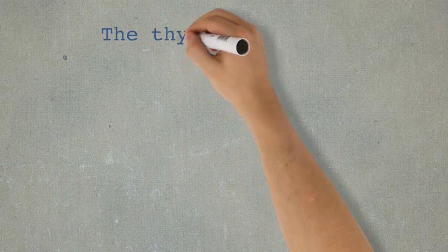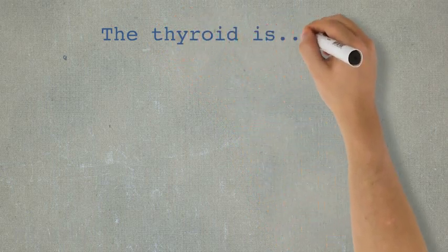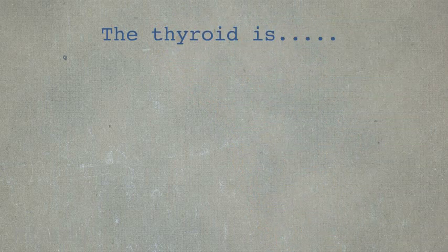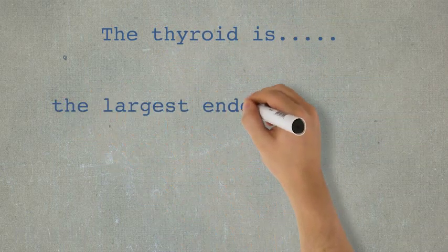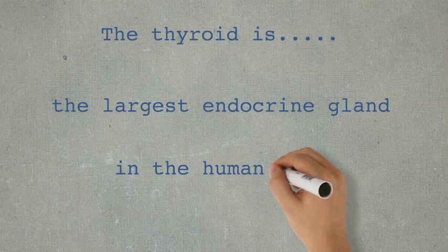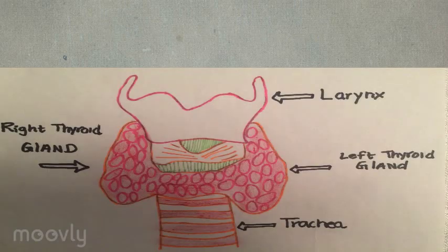The thyroid is the largest endocrine gland in the human body. It has a butterfly shape and is located in the neck surrounding the trachea.